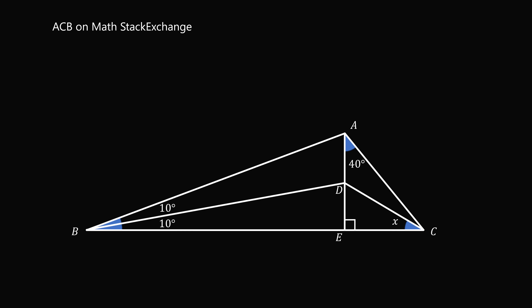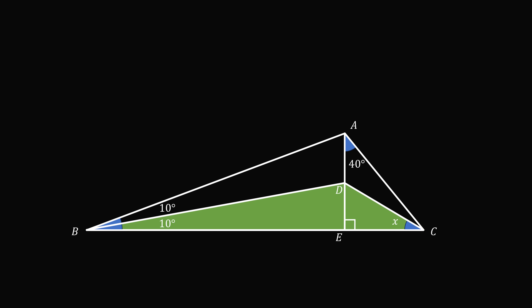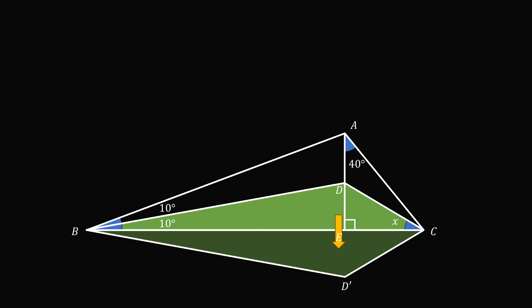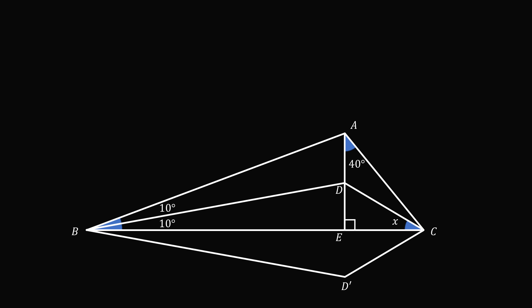We will get started with triangle BDC. Let's reflect this about BC. So we have a new triangle BD'C, where D' is the image of D about BC. This triangle is a mirror image, so everything from the triangle above it will be mirrored. So ED' will be a right angle at E. Then we have the angle EBD' will be equal to 10 degrees, and we have ECD' is equal to X as well.